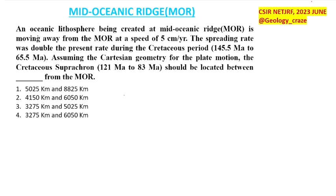An oceanic lithosphere is being created at the mid-oceanic ridge (MOR) and is moving away from it at a speed of 5 centimeters per year. The next condition is that the spreading rate was double the present rate during the Cretaceous period, which lies between 145.5 Ma to 65.5 Ma. So during that period, the speed is 10 centimeters per year.